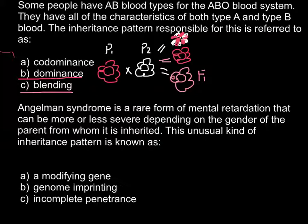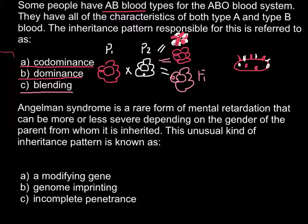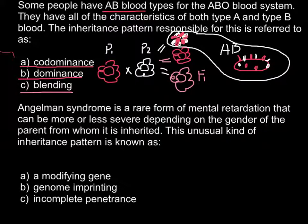This is exactly what we have with ABO blood types. Imagine red blood cells — on the surface there are three types of antigens that can be present: A, B, and O. For the AB blood type, both antigen A and antigen B are present on the surface and both are expressed simultaneously. This is exactly the codominance example.